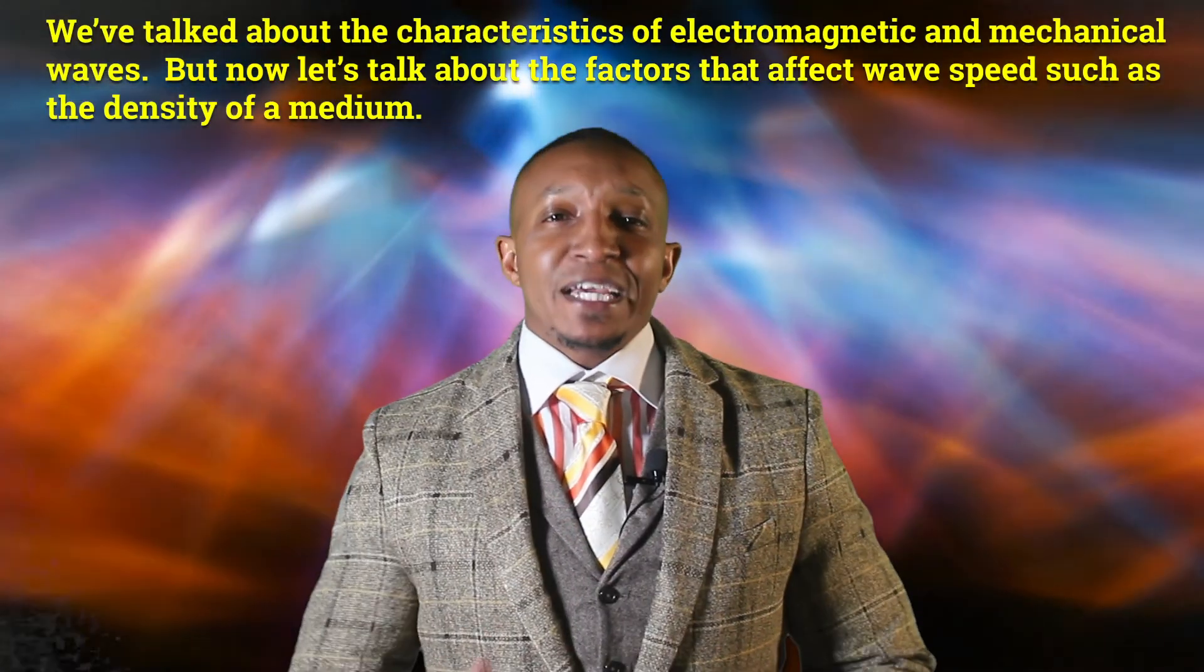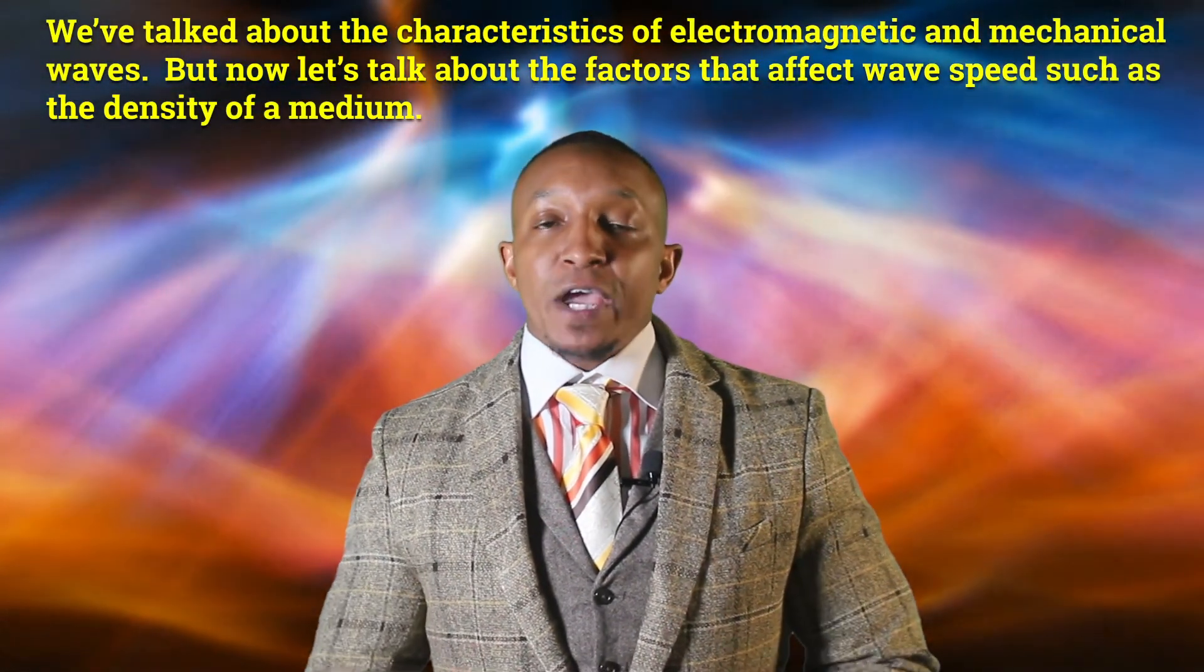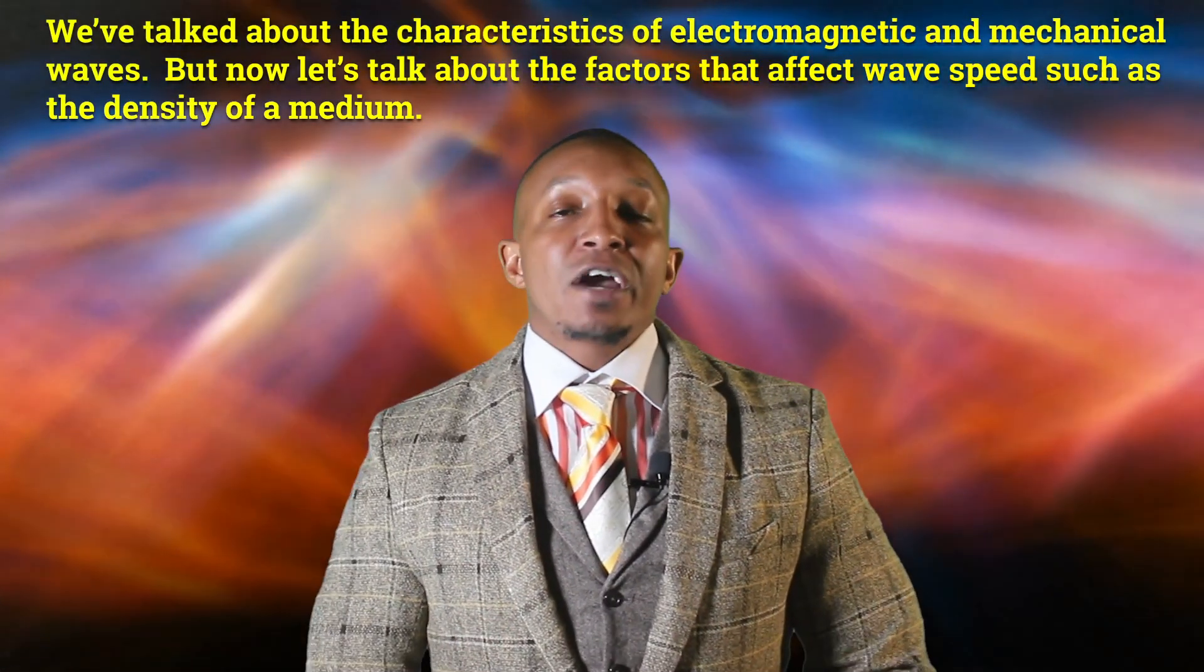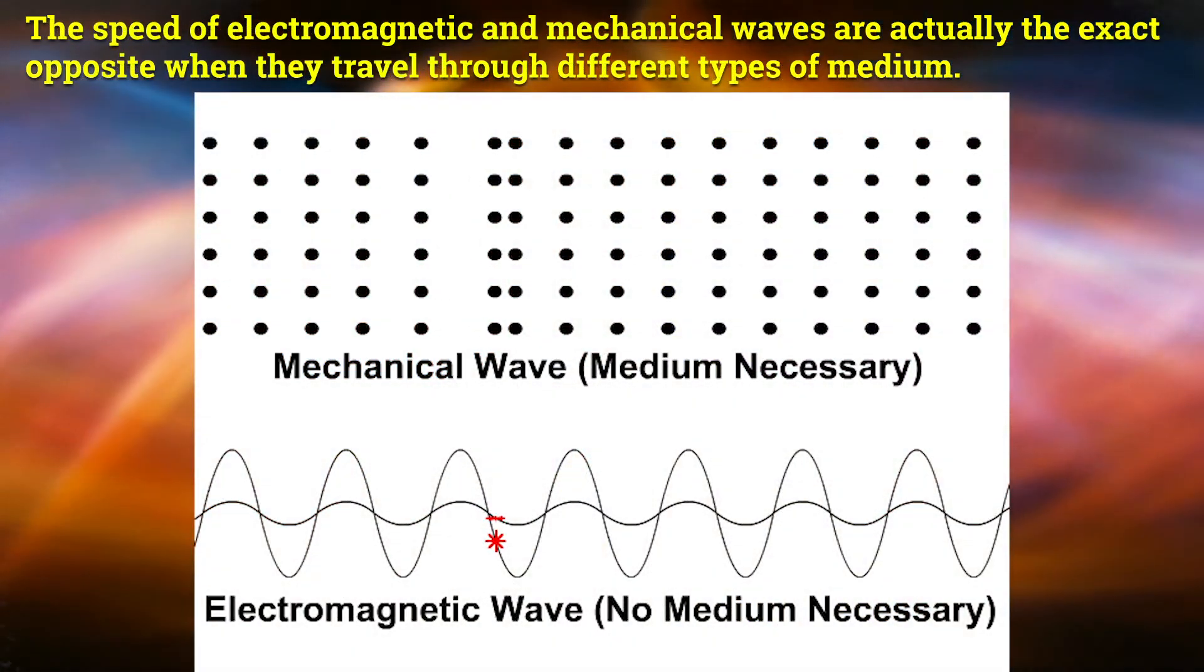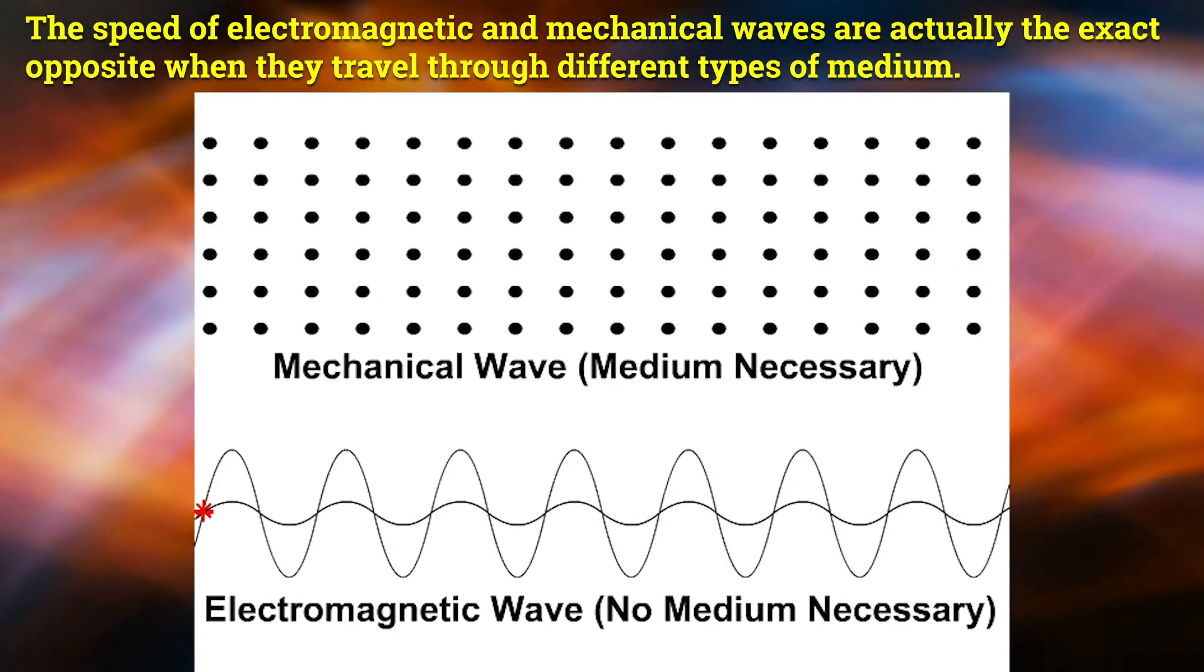We've talked about the characteristics of electromagnetic and mechanical waves, but now let's talk about the factors that affect wave speed, such as the density of a medium. The speed of electromagnetic and mechanical waves are actually the exact opposite when they travel through different types of medium. Let's start off with electromagnetic waves first.